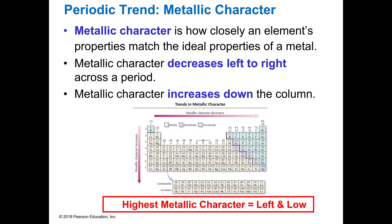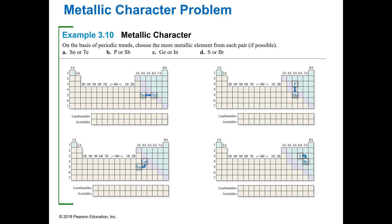Metallic character is how closely an element's properties match the ideal properties of metals. Metallic character is left and low, so they're pretty easy to figure out. For example, tin — symbol Sn, from Stannum, still seen as stannous fluoride in toothpaste — is lefter, so tin is going to be more metallic than phosphorus or antimony, since antimony is lower.